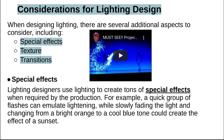When designing lighting, there are several additional aspects to consider, including special effects, texture, and transitions. Lighting designers use lighting to create tons of special effects when required by the production. For example, a quick group of flashes can emulate lightning, while slowly fading the light and changing from a bright orange to a cool blue tone could create the effect of a sunset.